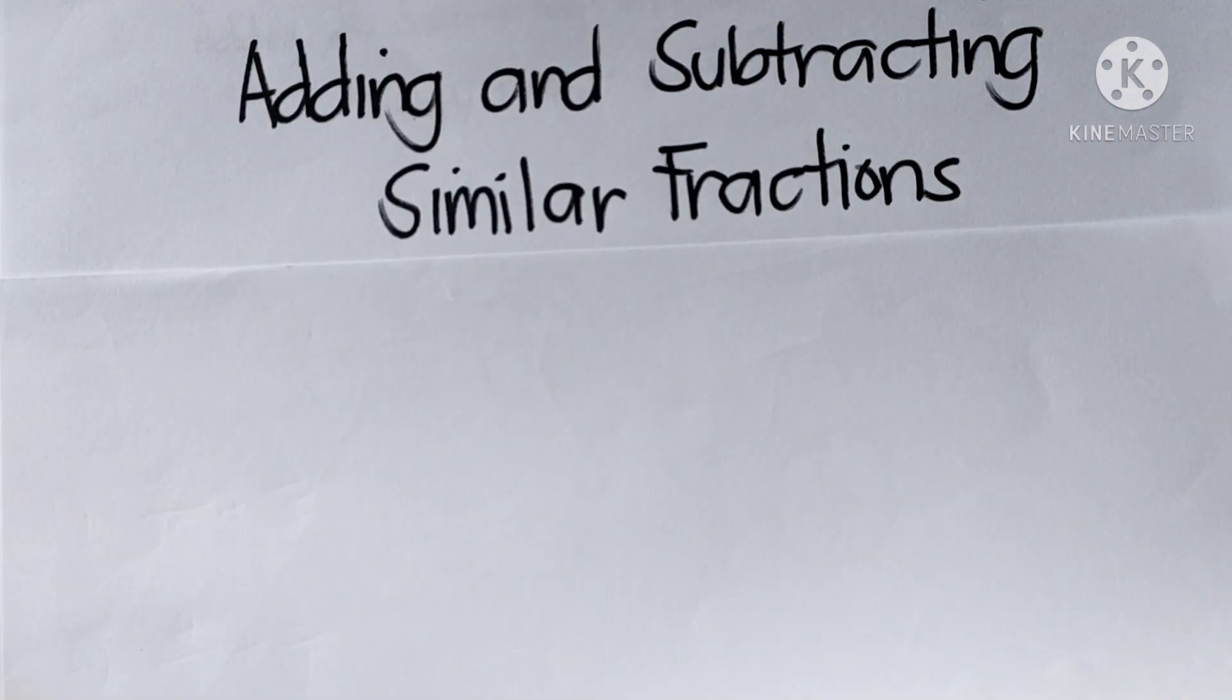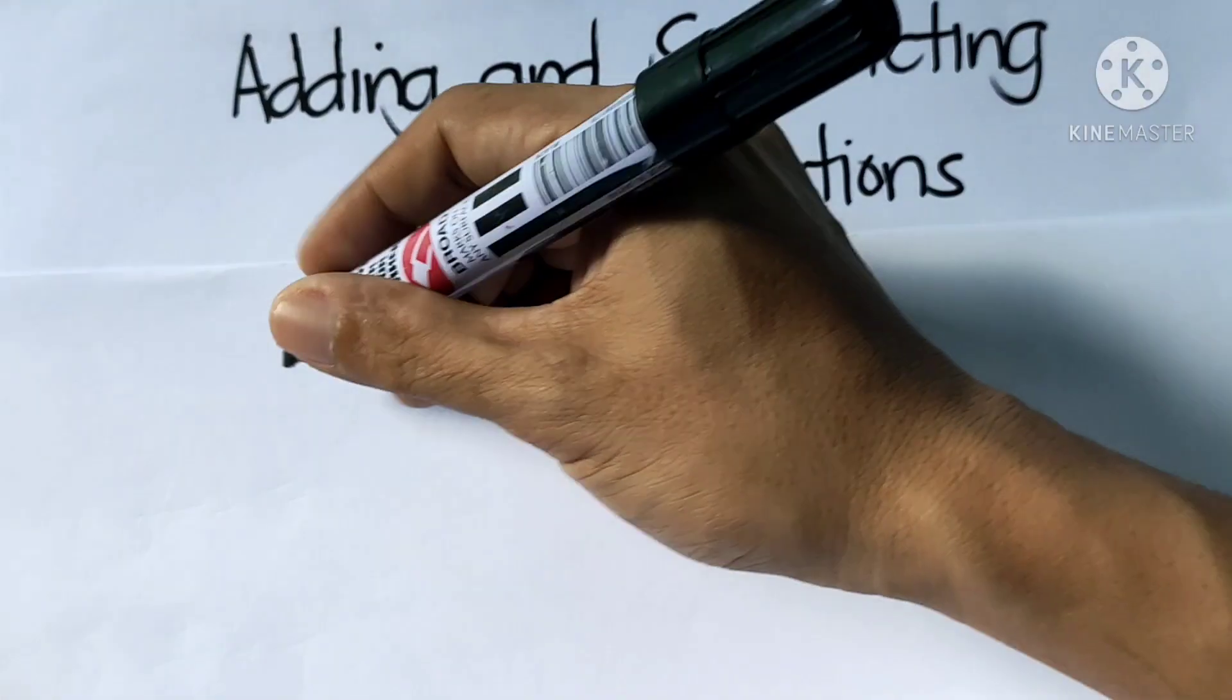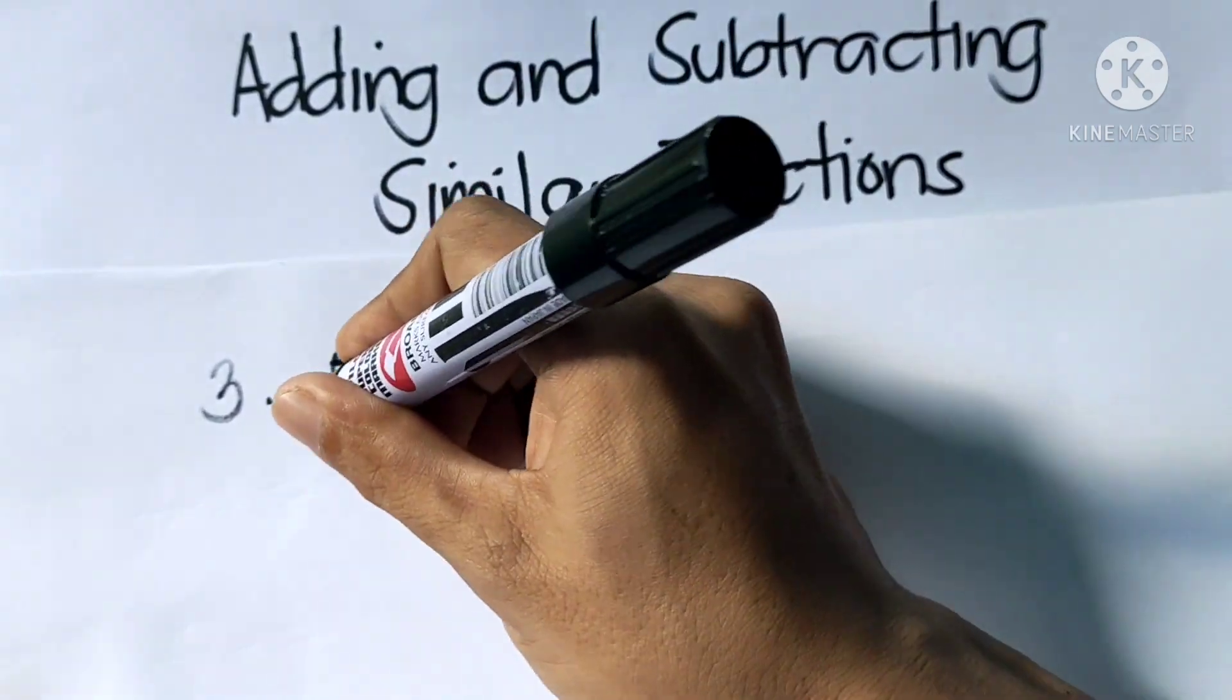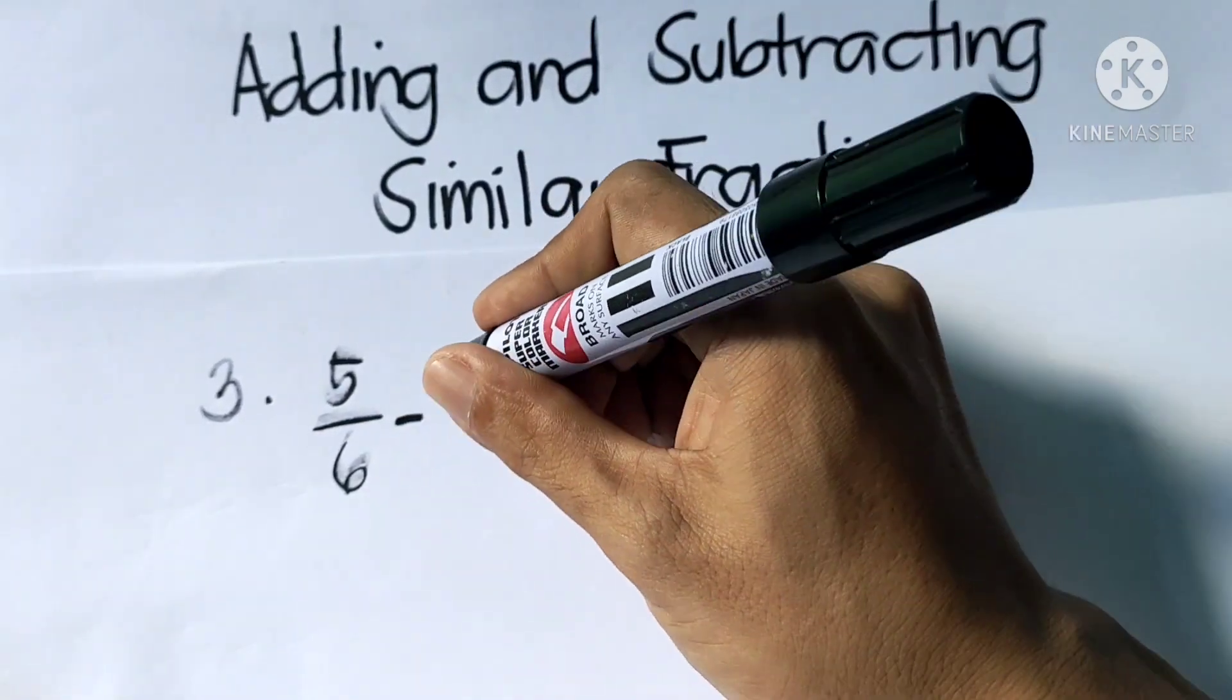This time we're going to subtract similar fractions. Example number 3: 5 sixths minus 4 sixths.